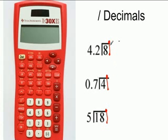So, to try this on your calculator, you would just put 8 divide sign 4.2. Remember, the inside number goes first. So, 8 divided by 4.2 is 1.904.